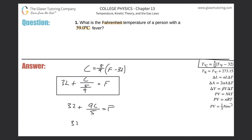So let's take now the Celsius temperature and plug it in. We got 9 multiplied by 39, all divided by 5. So 32 plus 9 times 39 all over 5. You get about 102.2 — 3 sig figs, so it looks like about 102 degrees Fahrenheit. And that's the fever.